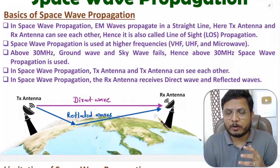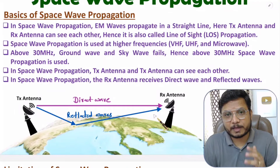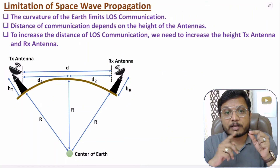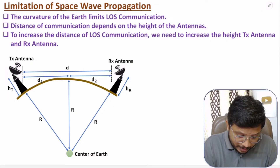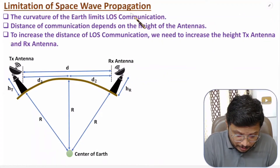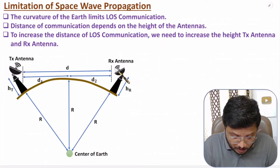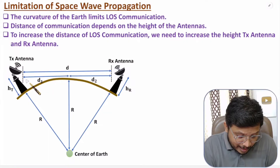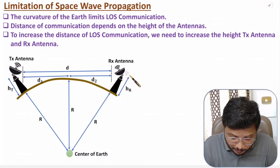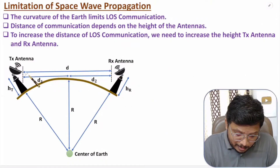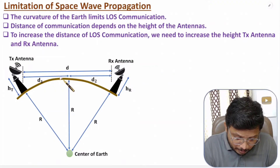There is a limitation in propagation distance due to the curvature of Earth. With line of sight communication in space wave propagation, the distance d is limited by Earth's curvature. To increase this distance d, you need to increase the height of the transmitting antenna or the height of the receiving antenna. The total distance d is equal to d1 plus d2.